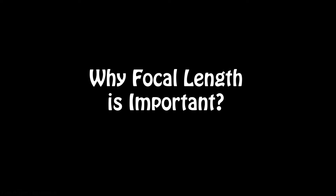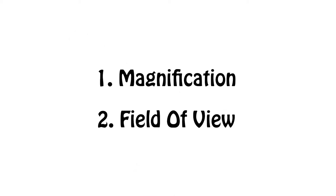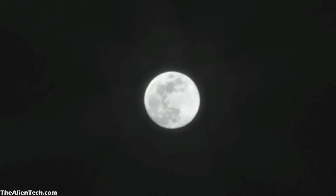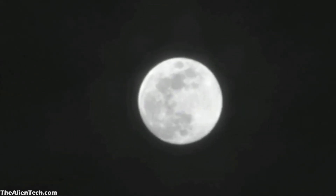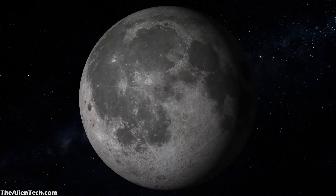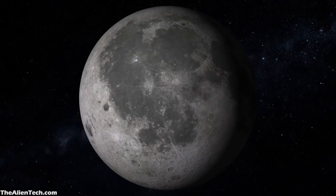So, why is focal length important? If you know the focal length of a telescope, then you can determine two important things: its magnification and its field of view. Magnification means how much you can zoom in on an object. When you zoom in, you can see more details of that object.